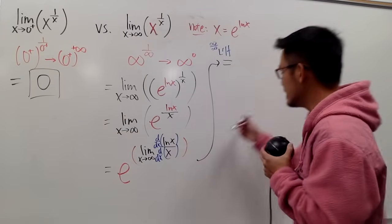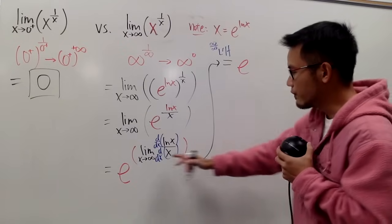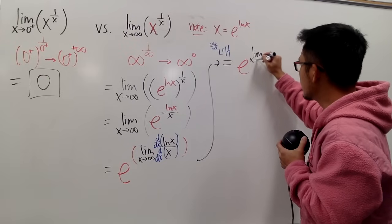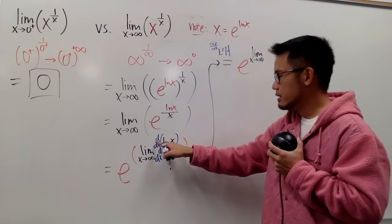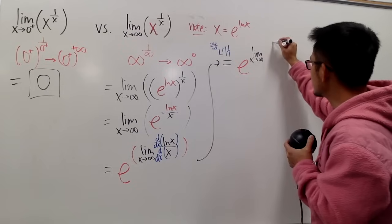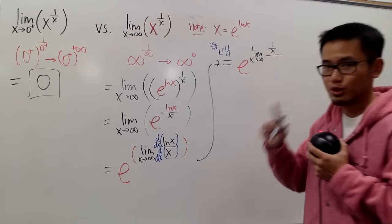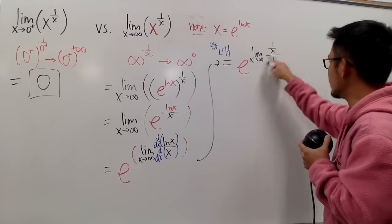Anyway, we still have the base e, and we'll just focus on this limit. Namely, we'll get the limit as x goes to infinity. The derivative of ln x on top is just 1 over x, over the derivative of x with respect to x is just 1. So, we'll have 1 over, like this, over 1.